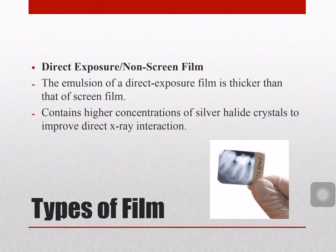There are two types of film. The first is direct exposure or non-screen film. In a direct exposure film, the emulsion is thicker than that of a screen film, and it has only a single emulsion. It contains higher concentrations of silver halide crystals to improve direct x-ray interaction. Because a direct exposure film doesn't use an intensifying screen, it cannot use a film cassette — a special type of cardboard must be used instead.